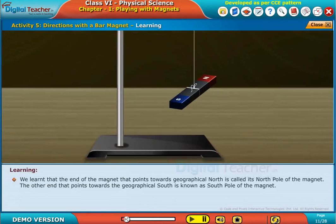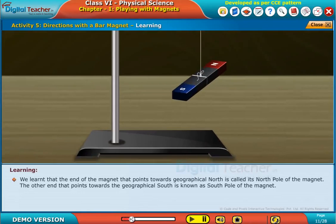We learned that the end of the magnet that points towards geographical north is called its north pole of the magnet. The other end that points towards the geographical south is known as south pole of the magnet.